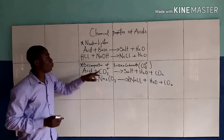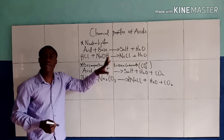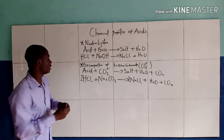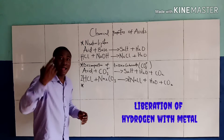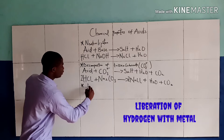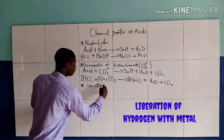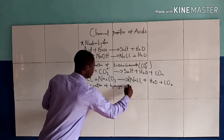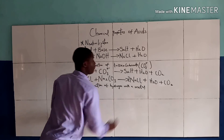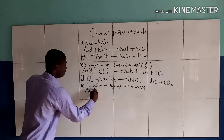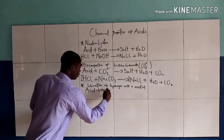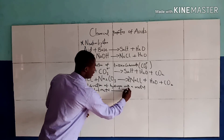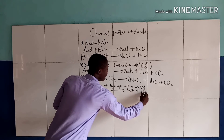The last chemical property of an acid I will be teaching is the liberation of hydrogen gas with a metal. When an acid reacts with a metal, it liberates hydrogen gas and we get a salt first, and also it liberates hydrogen gas.